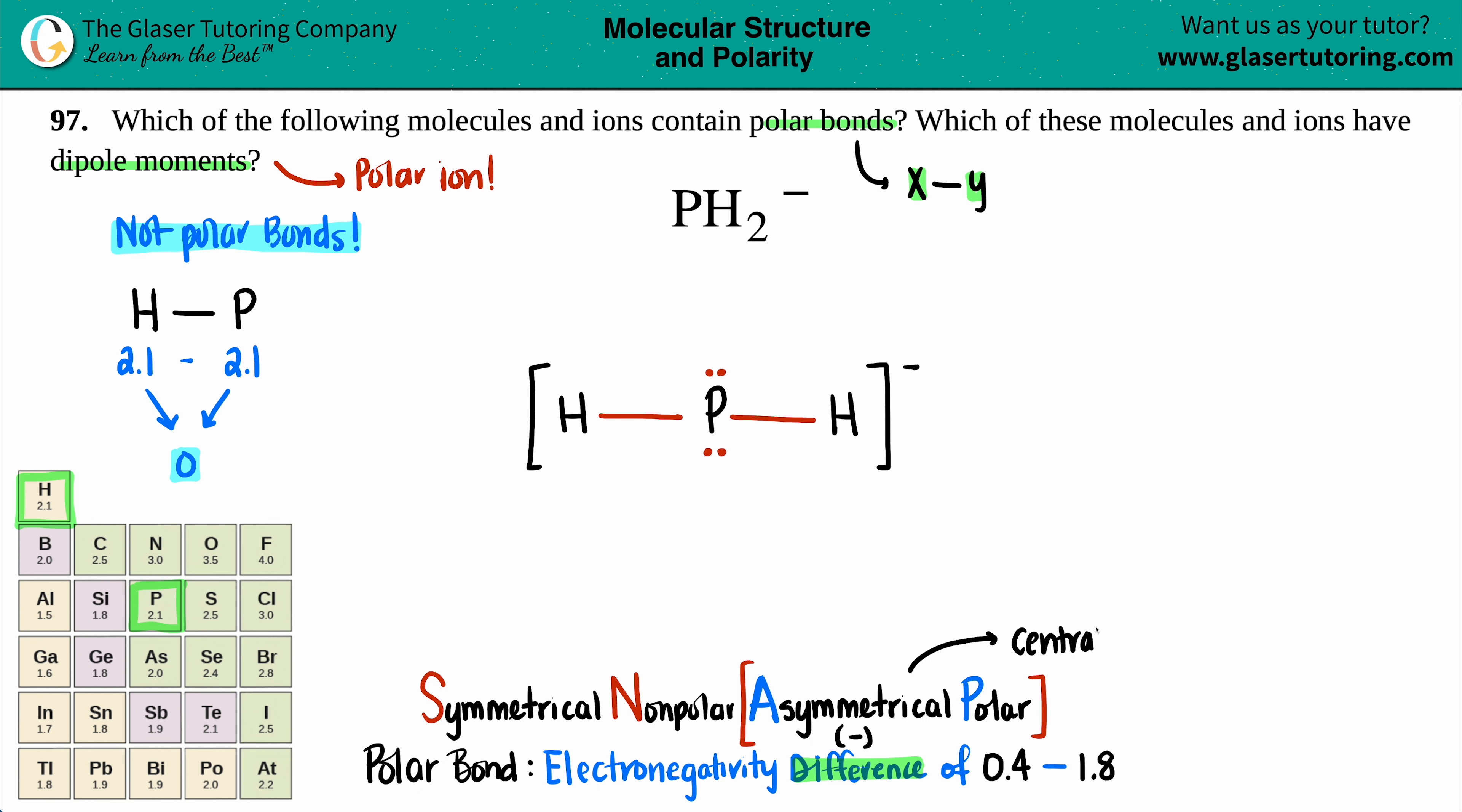Anytime that your central atom has lone electrons, I don't care if you have one pair, two pairs, three pairs in the center. If your center has lone pairs, you are automatically going to be polar. So I don't have to look any further. I see that this phosphorus has two lone pairs, and one is good enough. So as soon as you see that you have those lone pairs, you are a polar ion in this case. And if you are polar, you have a dipole moment.